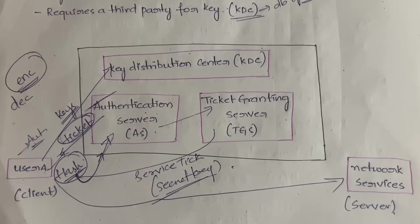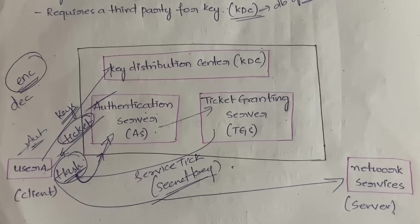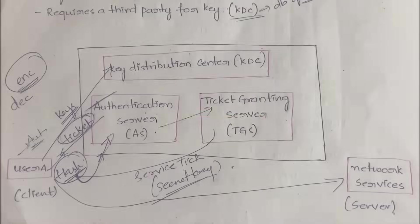So Kerberos is a network authentication protocol. When you want to access the services of a network, it checks whether you are a correct, authorized user or not — whether you are an attacker or a third party. If so, it will not allow you. Kerberos has two servers: the Authentication Server to check the authenticity of the user, and the Ticket Granting Server to give the session key, which is the secret key of the network. That's all — see you in the next video.